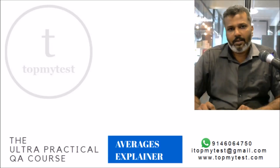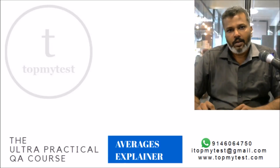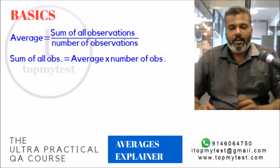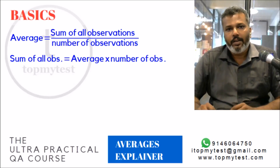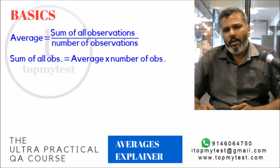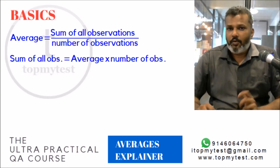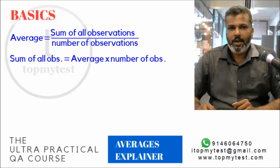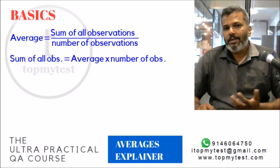In today's session we will look at averages. The good part about averages is that there is only one relation to deal with: average is the sum of all observations divided by the number of observations. You can flip this and say the sum of all observations equals average times the number of observations. Now let's see how to use this in practice.